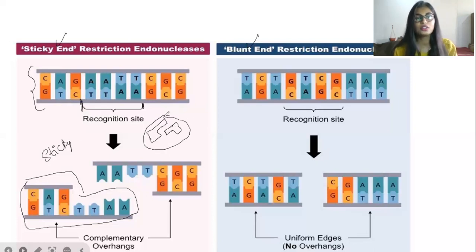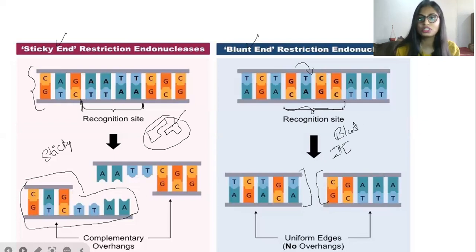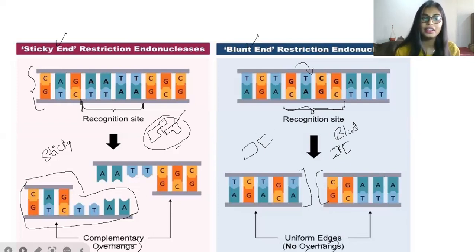These types of ends are created when restriction endonucleases act on a recognition site — they are called sticky ends. Another end created is the blunt end. You can see the recognition site — when restriction endonucleases act on a specific site and create ends with smooth, uniform edges, those are called blunt ends. Sticky ends create overhangs; blunt ends create no overhangs — there are uniform edges when blunt ends are created, and non-uniform ends when sticky ends are created.